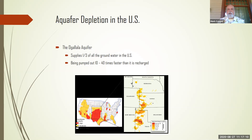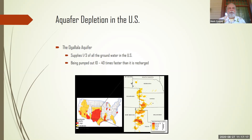On the topic of aquifer depletion in the US: one of the largest aquifers on the planet is the Ogallala, which supplies about a third of all groundwater in the United States.